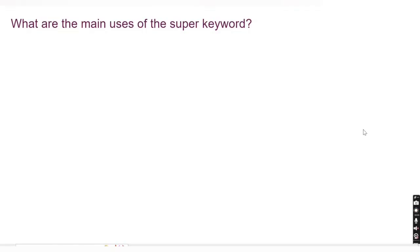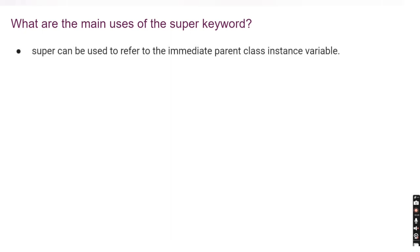Hello friends, welcome to CodeCrush Coding. In this video we are going to learn the Java interview questions related to the super keyword. The super keyword in Java is a reference variable which is used to refer to the immediate parent class object. This is mainly used in the concept of inheritance, because in inheritance we have the terms parent class and child class.